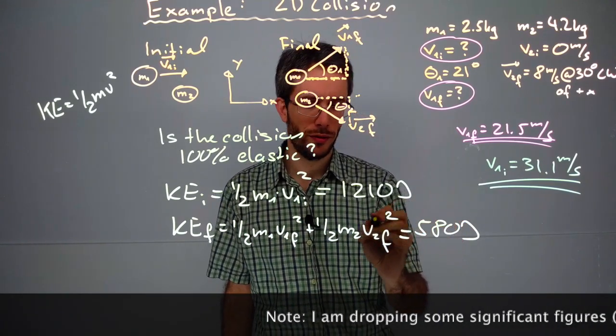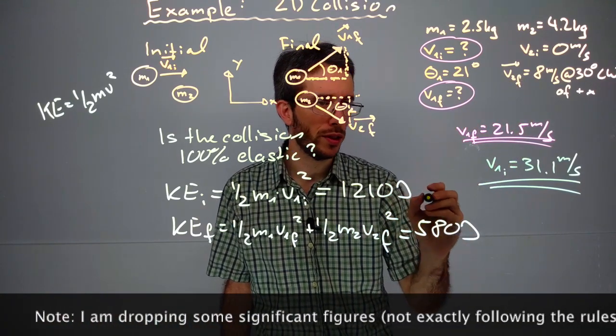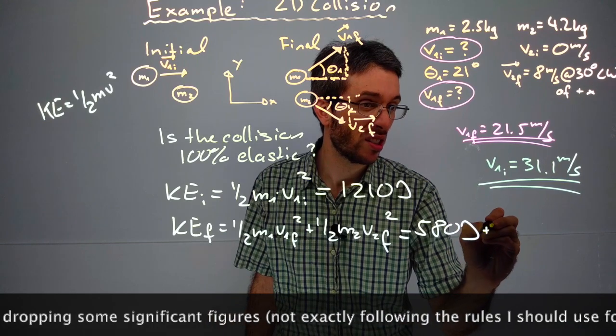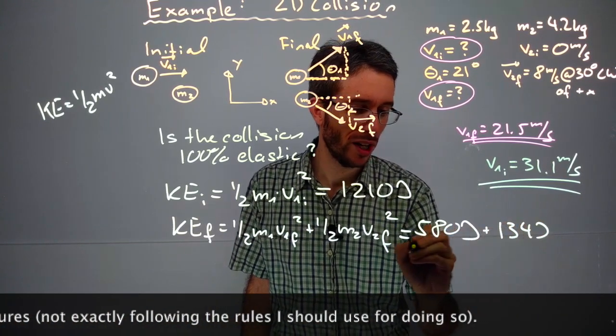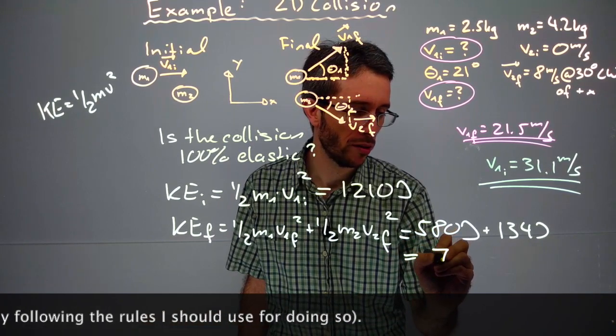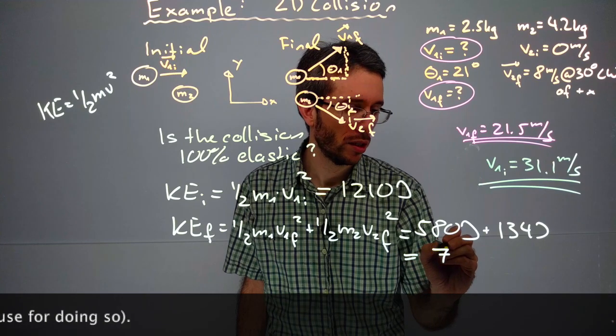If I use my 8 meters per second for v2, I get plus around 134 joules for that one, which gives me a total of around 710 joules.